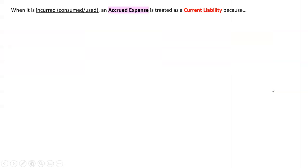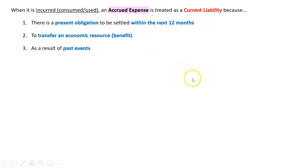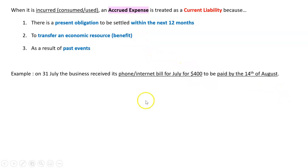So what we need to deal with is how we're going to treat it when we do have one. When an accrued expense is incurred or consumed, we're going to treat it as a current liability. Why? Well, any liability has got to have three things. There's got to be a present obligation to be settled within 12 months, and that obligation is to transfer an economic resource or benefit to another entity, so it's pretty much always cash. And it's got to be the result of a past event.